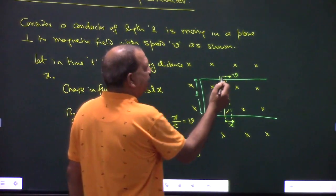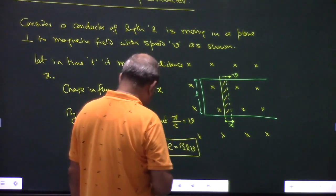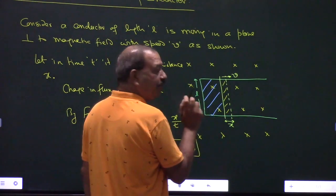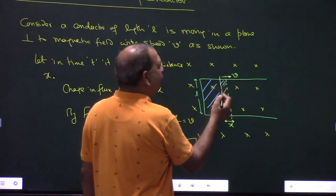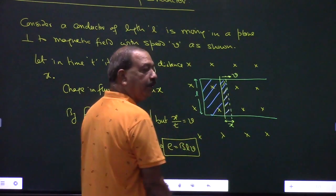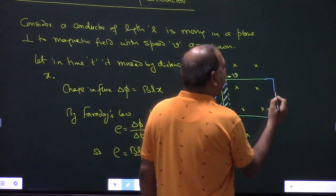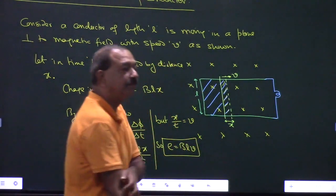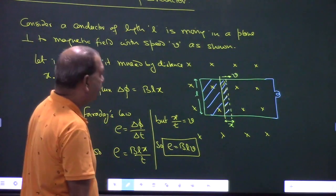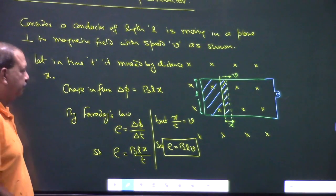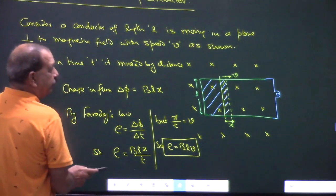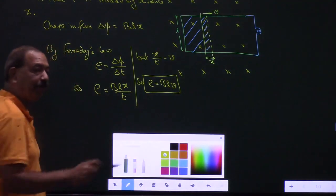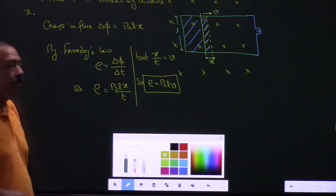The area is linked within the field, so there is flux. As area is added, the total flux change increases, and current flows. This applies when the conductor is moving in a plane perpendicular to field.